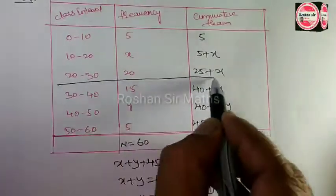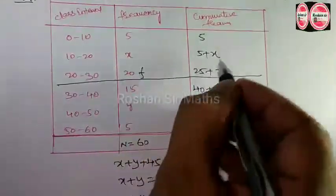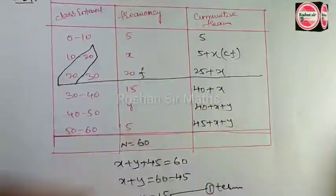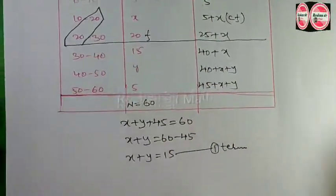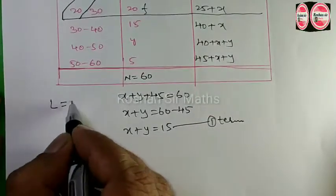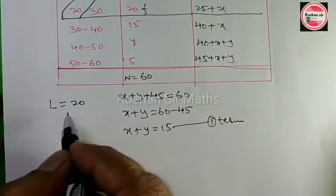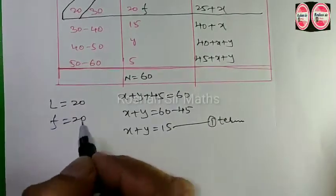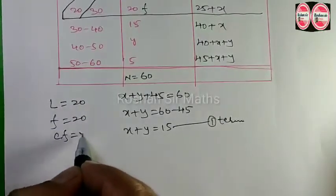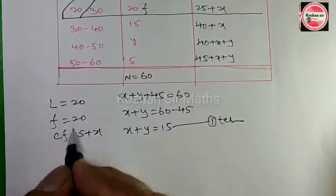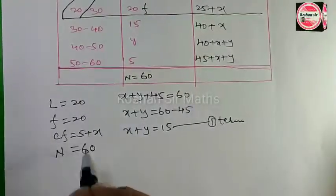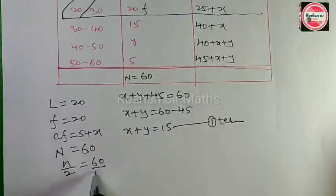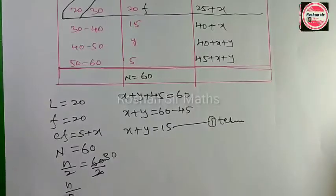The median class number is 20. F is equal to 20. CF is equal to 5 plus x. N is equal to 60. N by 2 equals 60 by 2, which is 30. So N by 2 is equal to 30.